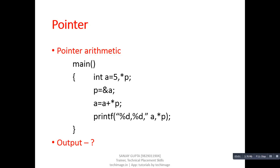This is another example where we have to identify the outputs. Suppose there is a variable a whose value is 5, then a pointer p. If we assign the address of a into p, then p will contain the address of a. Now the equation is a = a + *p. The value of a is 5 and *p is also 5. If we add 5 plus 5, the current value of a becomes 10, so the output of a will be 10. Now what is the meaning of *p? Its meaning is asterisk 101. Previously the value at this address was 5, but now since a is 10, asterisk 101 will also print 10.